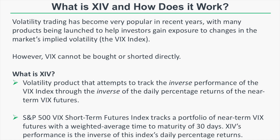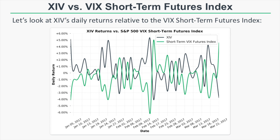Let's take a look at XIV's performance relative to this index on a daily basis. In this graph we're looking at the daily percentage returns of XIV compared to the daily percentage returns of the S&P 500 VIX short-term futures index — we'll just refer to that as the near-term VIX futures. As we can see, anytime the near-term VIX futures have a negative percentage return, XIV has a positive return with the same magnitude. If the near-term futures fall 5%, XIV will be up about 5%, and if they rise 5%, XIV will be down about 5%. XIV closes at 4 p.m. Eastern time and the VIX futures stop trading at 4:15 Eastern time.